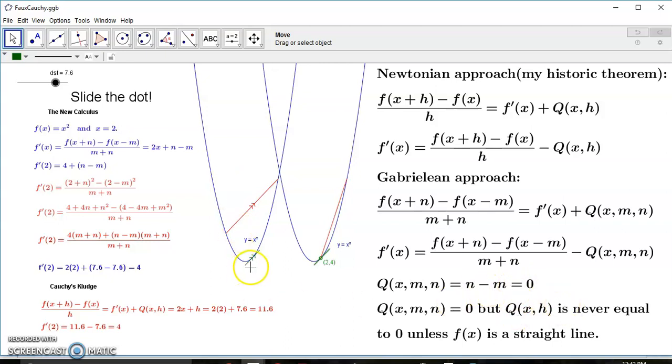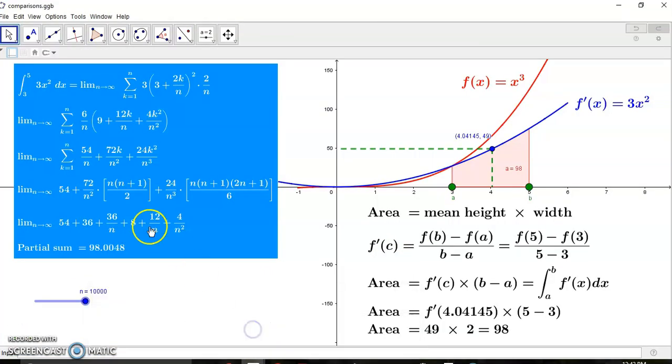So the new calculus is 100% rigorous, unlike your bogus calculus which requires limits. And because Newton and nobody before me was able to realize this identity here, which comes from my historic theorem at the top, they developed a lot of theory such as this.